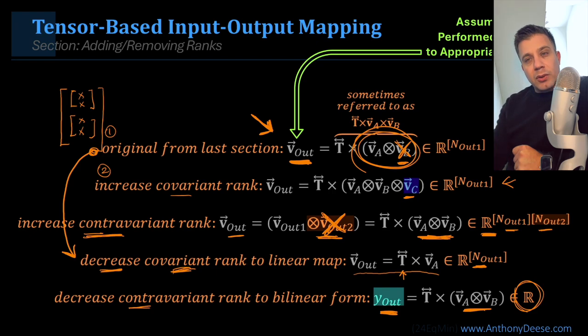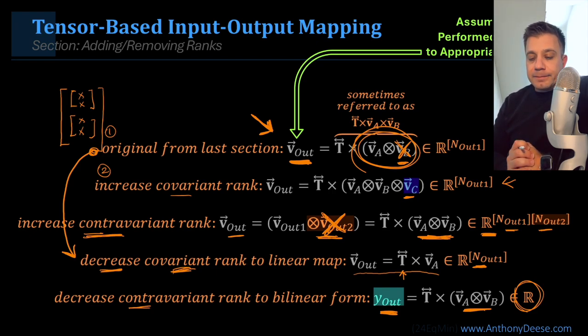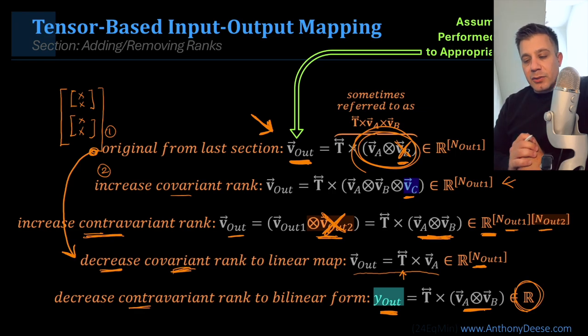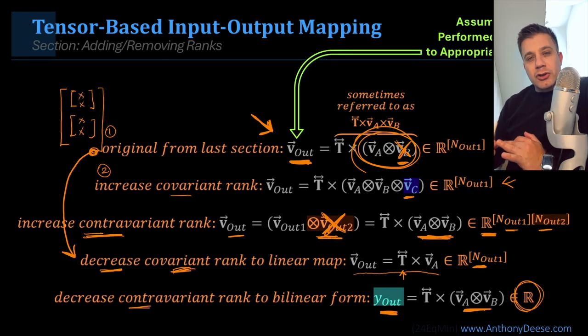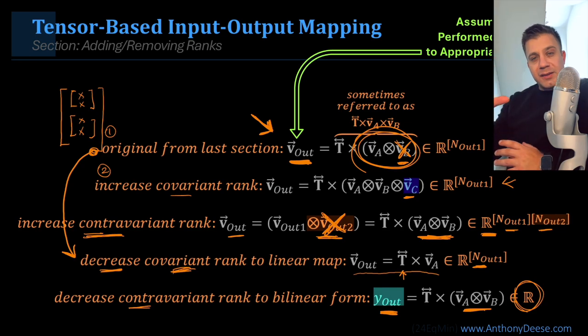In the next module, we're going to look at other characteristics. We've just barely started, looking at the tensor-based input-output mapping. We still need to look at its structure, coordinate matrix, and basis, and we'll use this methodology to further explain the difference between our base rank-3 tensor and the different variations we analyze.